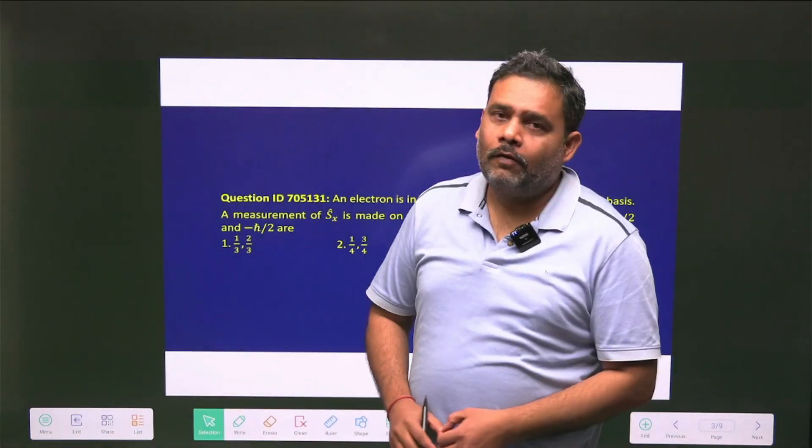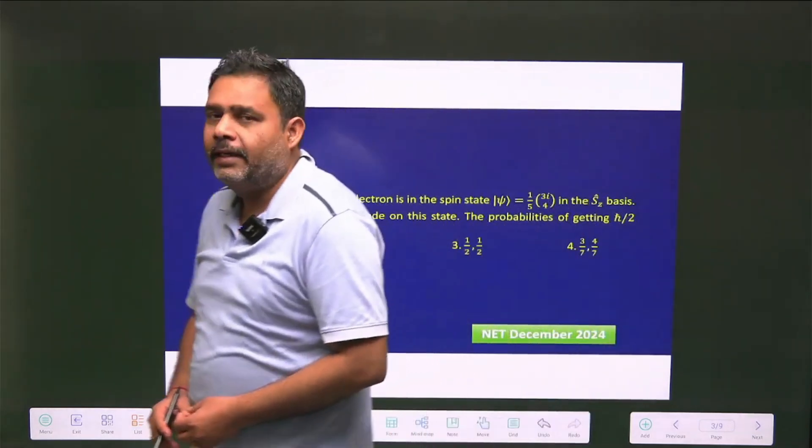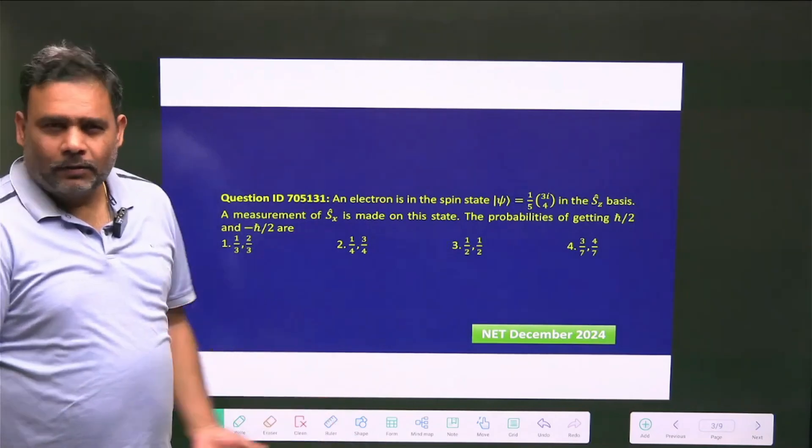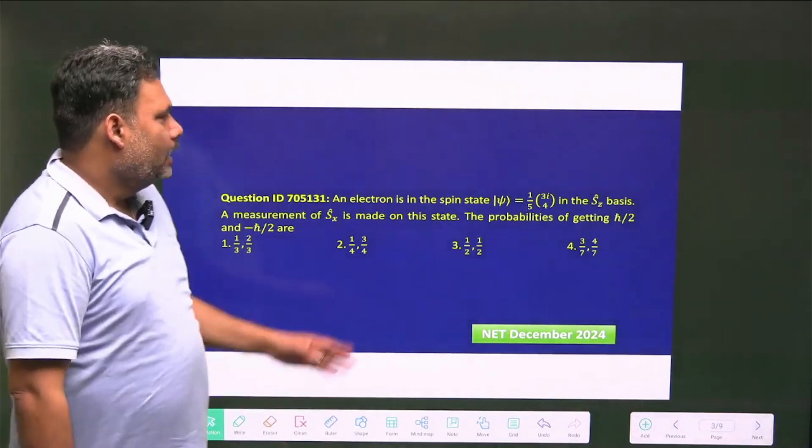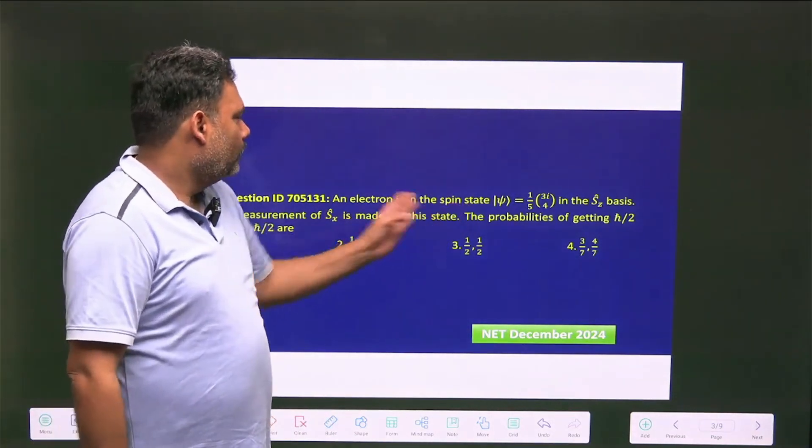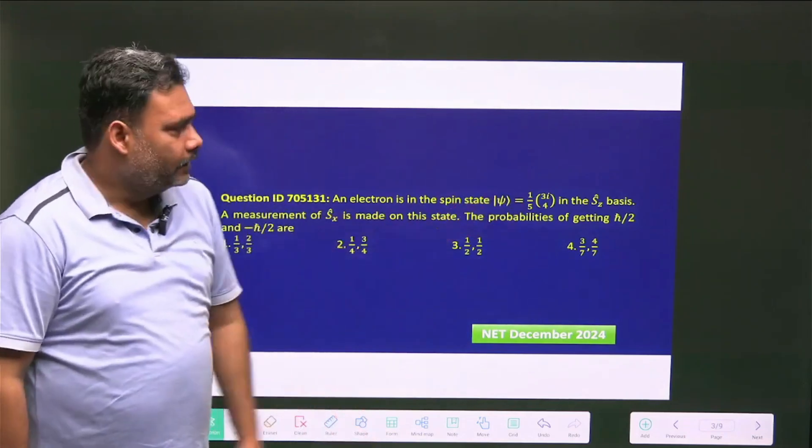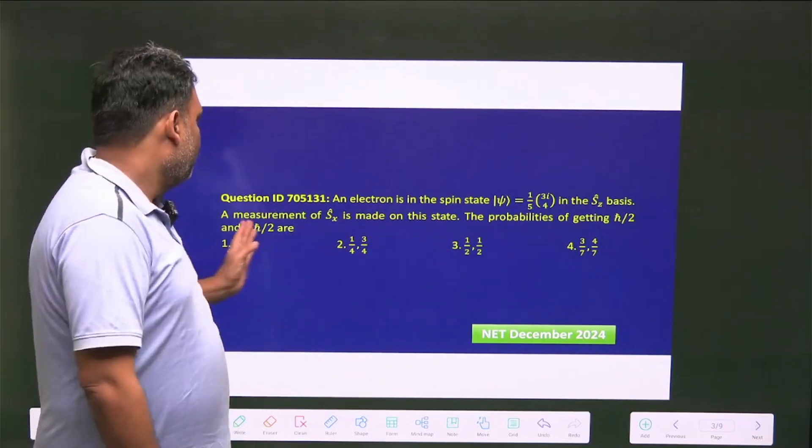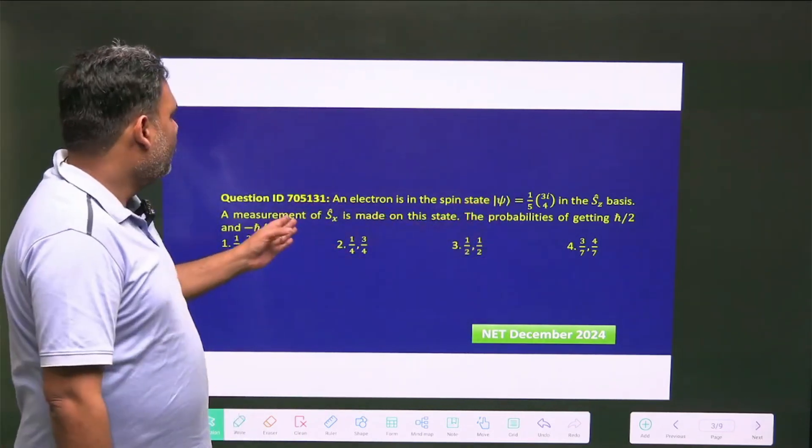Hello students, let's try to solve one more question from CSIR NET 2024. This is a very simple, straightforward question. It is given that for an electron, there is one spin state given that is normalized and in the Sz basis. A measurement of Sx is made on this state.